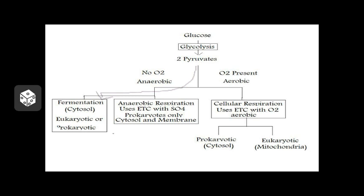Fermentation supports the process of glycolysis and allows those cells to continue doing glycolysis over and over again. Glycolysis makes two ATPs at a time from a single glucose molecule, so if two ATPs at a time is enough for you, that's fine. However, what about cells like ours? We have animal cells with high energy needs. Two ATPs at a time is not going to be enough. So this time we're going to take our two pyruvates into the mitochondrion and take them through cellular respiration.